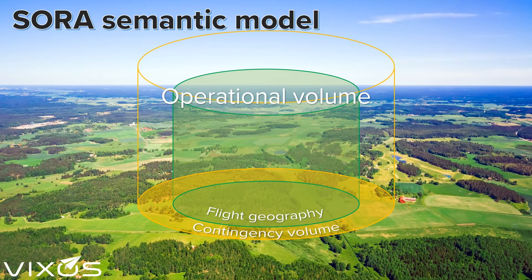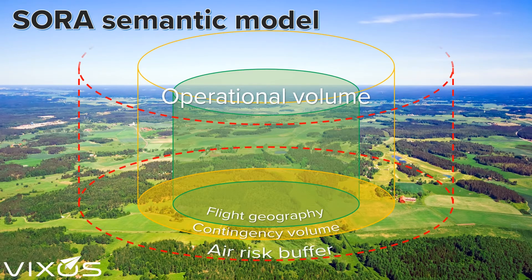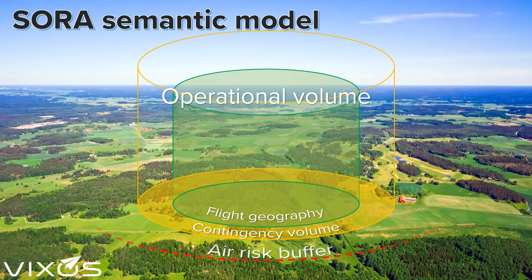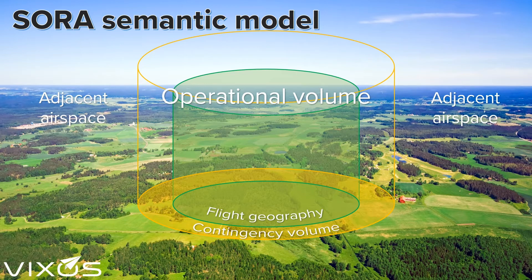In the semantic model there is an additional volume called the air risk buffer, but it is optional and it is not used in step 9, so we will disregard it here. We now get the first hint of what exactly step 9 is about, because the airspace outside the operational volume is what we call adjacent airspace. How much of the outside airspace is effectively adjacent really depends on the range of your aircraft. For a smaller aircraft with limited range, the adjacent airspace may extend perhaps a few kilometers from the operational volume, but for a long-range fixed-wing aircraft it could easily be tens of kilometers.